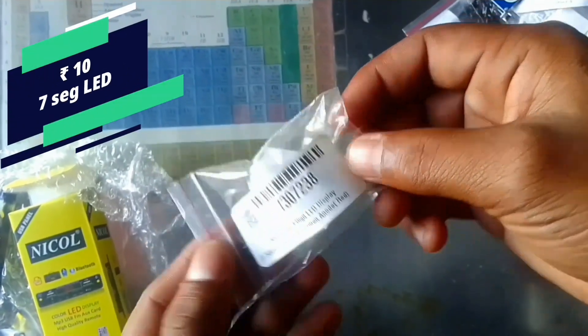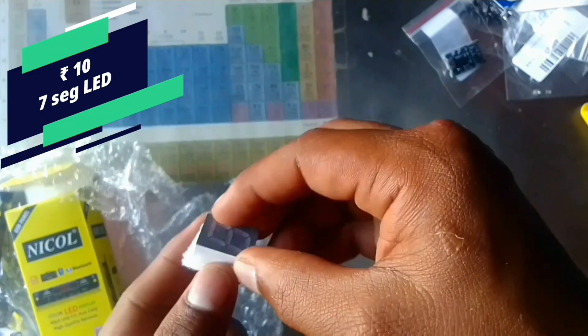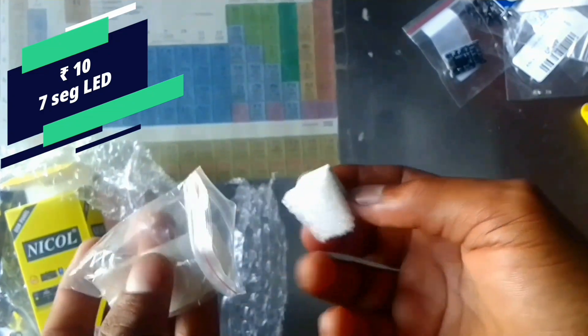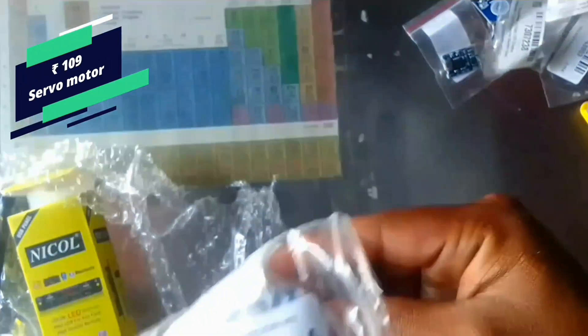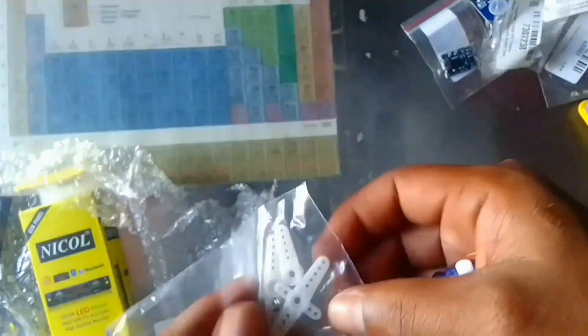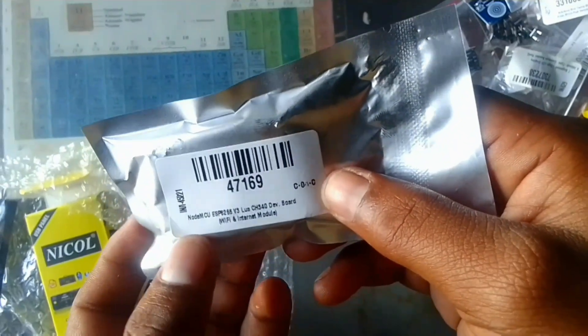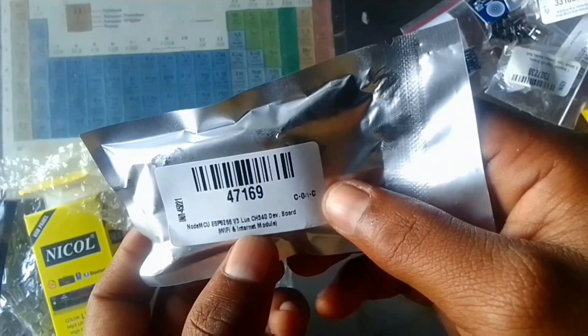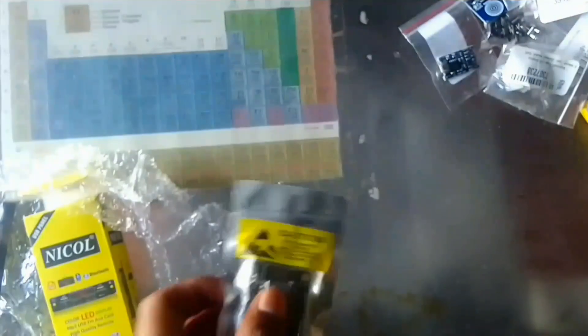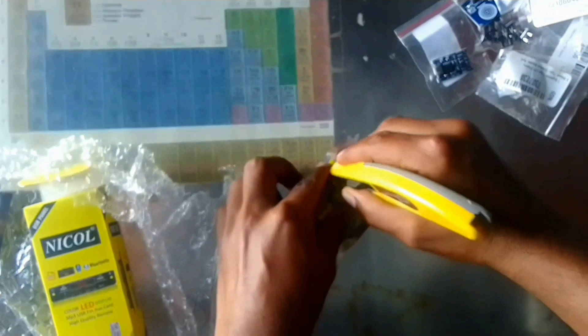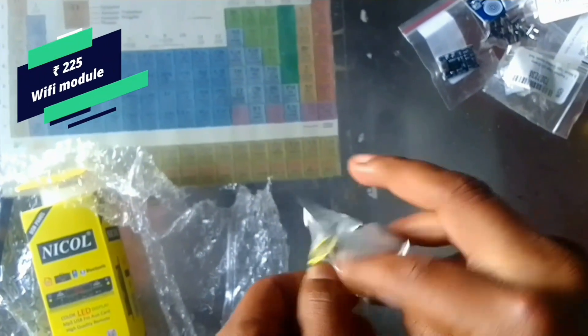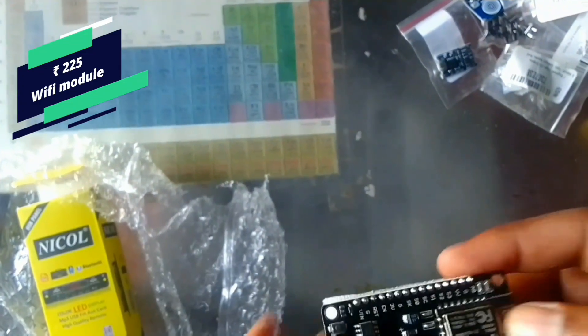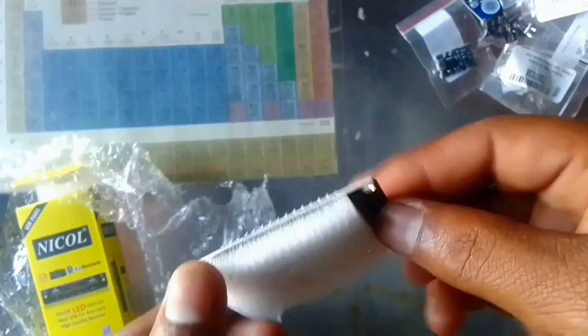This is 7 segment LED. We can do more projects with this. And this is servo motor. And this is another main product in our future experiment videos - it is Wi-Fi module. Plus internet, we can interact with Arduino with this board.